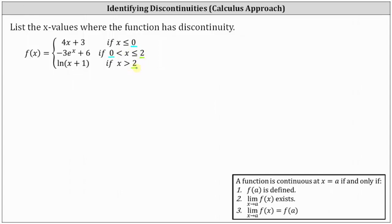We'll use the definition of continuity at a point to test whether the function is continuous at x equals zero and x equals two. Beginning at x equals zero, number one, we need to check that f(0) is defined. Since x equals zero is in the interval where x is less than or equal to zero, we use the function rule f(x) = 4x + 3. So f(0) = 4(0) + 3 = 3. f(0) is defined.